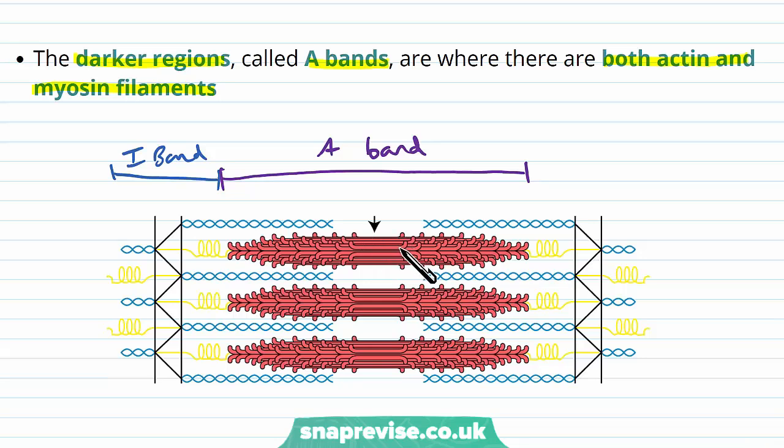So we have this red protein which is the myosin, and we also have lighter proteins which are the actin. And the mixture of both of them make the whole area of the A band darker than the I band. And then here would be another I band.